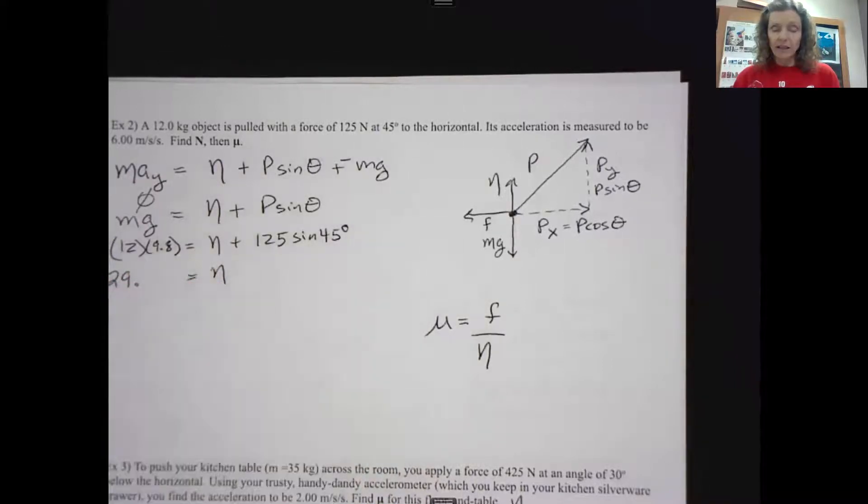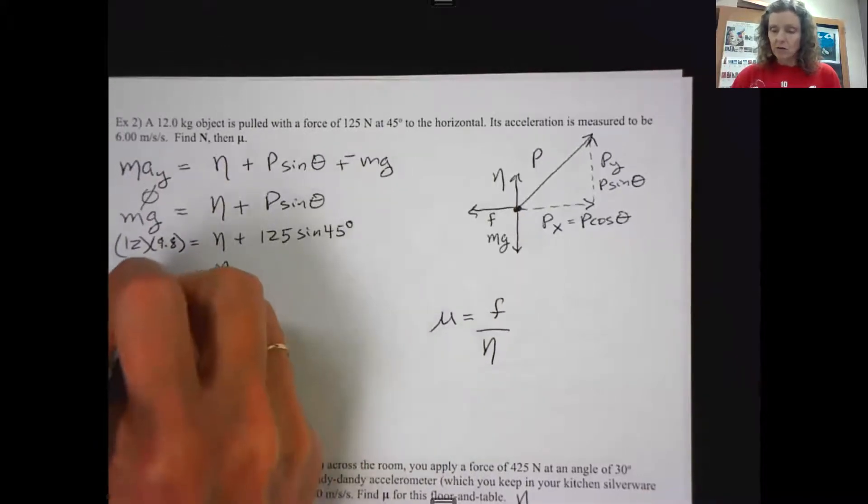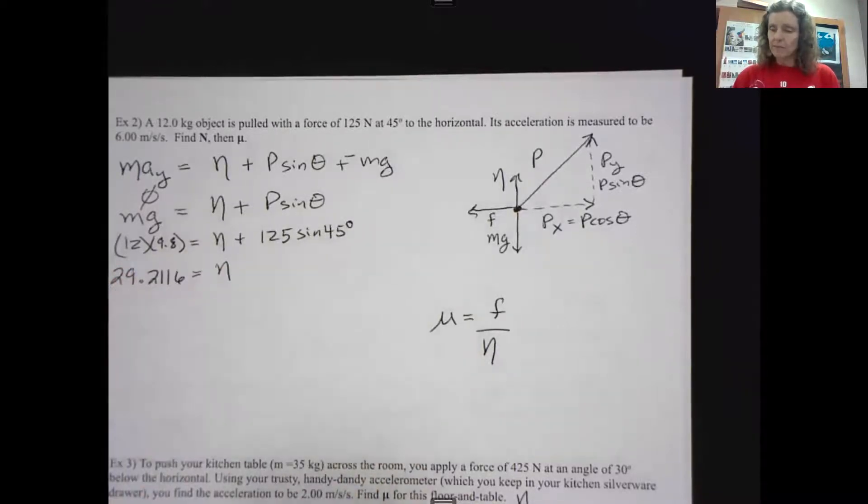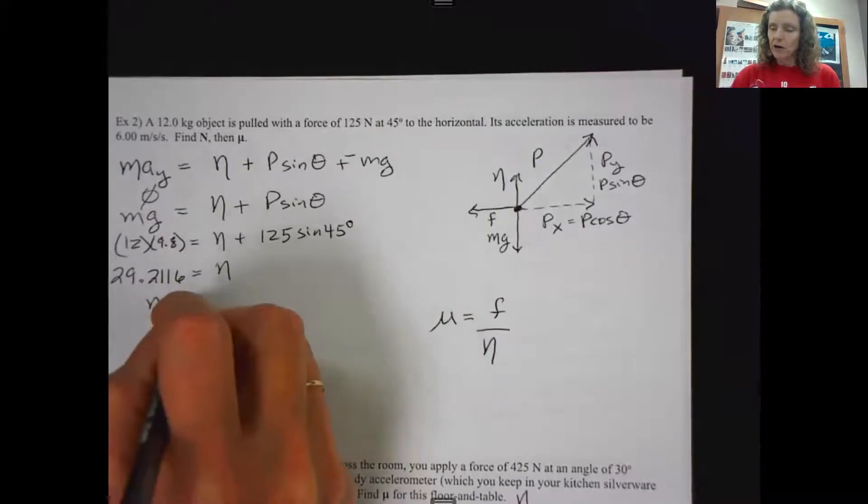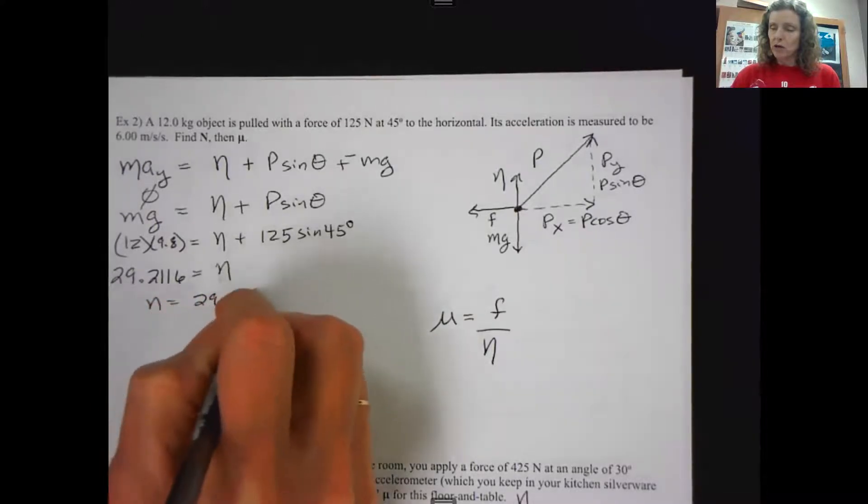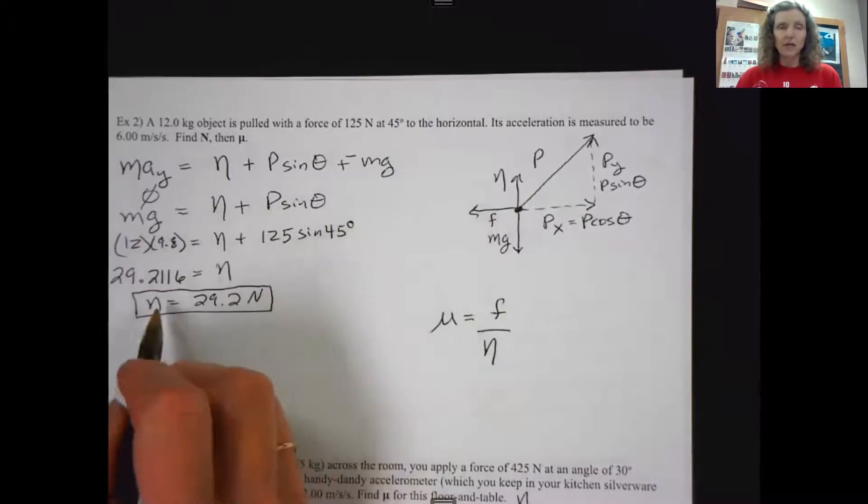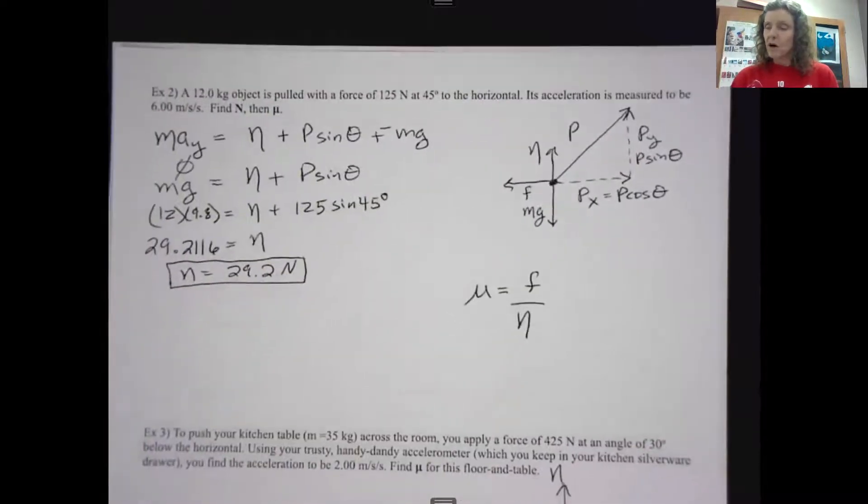And I've calculated a normal force of 29.2. Now I may need this in another calculation. I expect to, in fact. So you might want to write down some extra digits. Keep that handy because you're going to use that again. But if I'm just reporting my answer, I'll go ahead and round it to 29.2 and I'll put the unit on it. So my handwriting is making normal look different from Newton's.